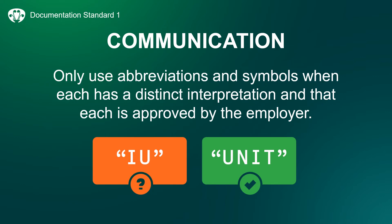There is research to show that errors in client care have been directly related to the use of abbreviations. Indicator 1.10 in the standards for documentation states that nurses only use abbreviations and symbols when each has a distinct interpretation and has been approved by your employer. From a safety perspective, it's best to avoid using abbreviations. For example, a capital IU is meant to represent international units but could be mistaken for IV. The Institute for Safe Medication Practices, or ISMP, suggests writing the word unit. For more information on safe use of abbreviations, visit ISMP's website.